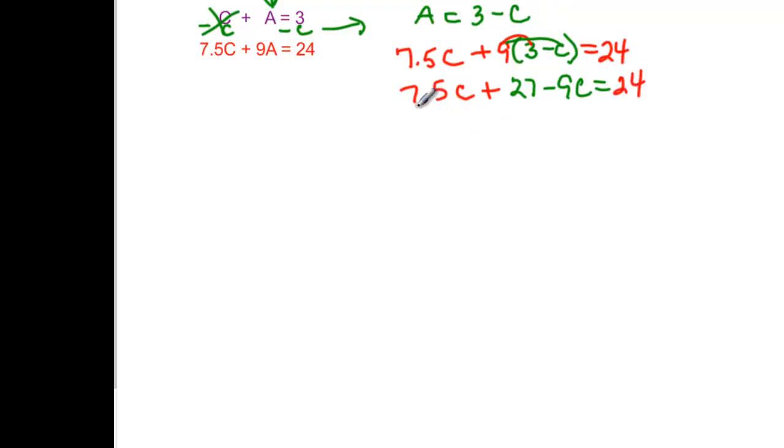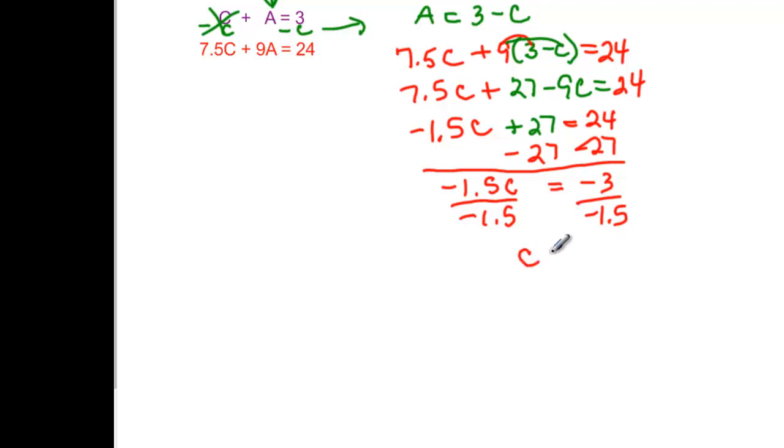So 7.5 minus 9 is negative 1.5C, and then plus the 27 is equal to the 24. Subtract the 27 from both sides. Negative 1.5C is going to be equal to negative 3. And if we divide by negative 1.5, that should be 2.